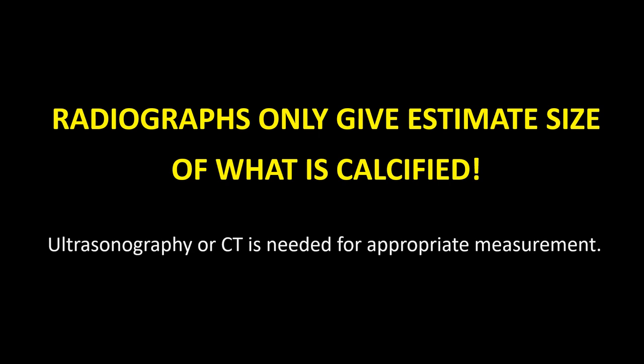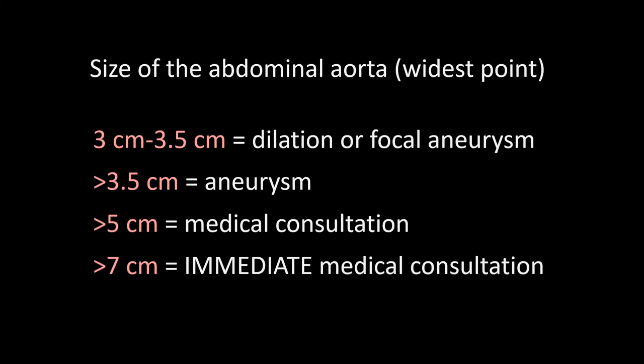There can be a dissecting abdominal aortic aneurysm that's not calcified and you'll never see it on the X-ray. That's why ultrasonography or CT are more appropriate diagnostic tools for measuring the true size and complications of any type of abdominal aortic aneurysm, and CT is the gold standard.